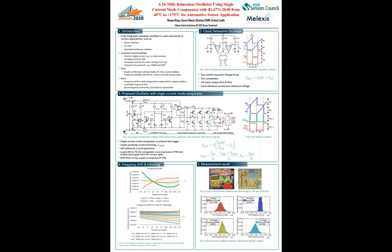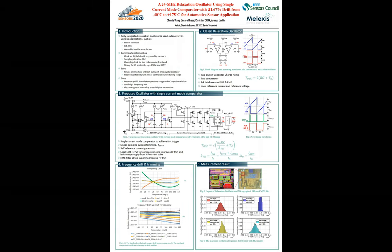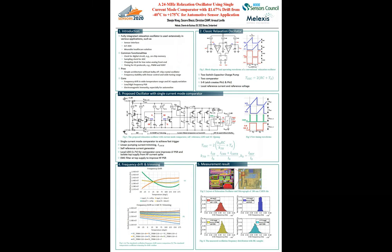We created this local LDO to generate 1.7 volt supply for the high-speed AC comparator, which also isolates the top supply from high-frequency spikes. A local EMC filter is created to improve the high-frequency PSR.